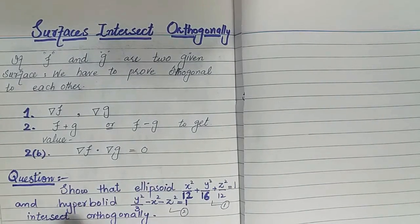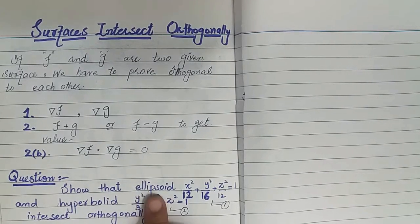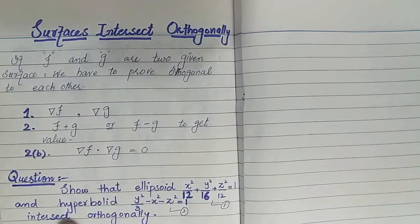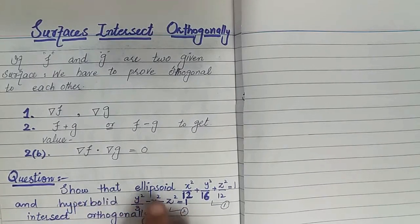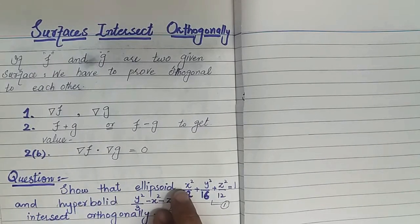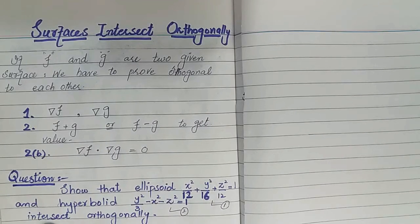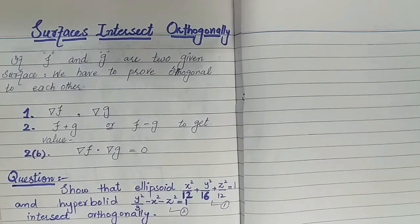The statement gives us the equation of an ellipsoid as equation one and a hyperboloid as equation two. We have to show that these two surfaces intersect orthogonally to each other.